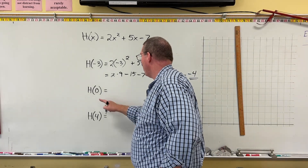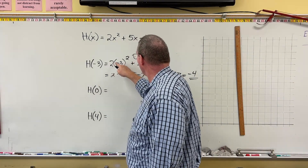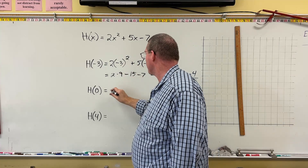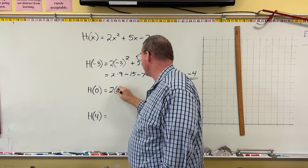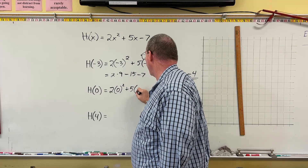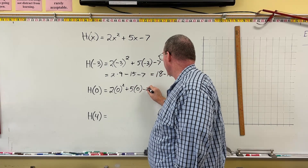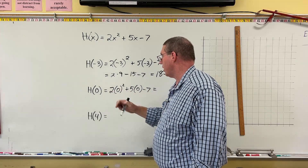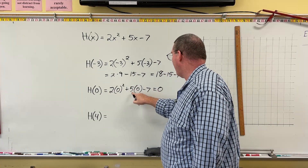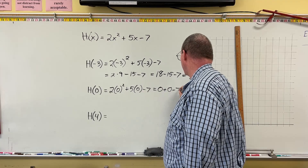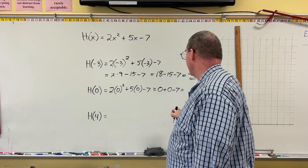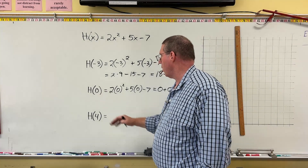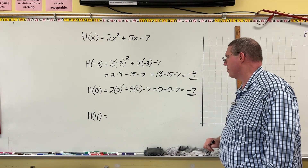For H(0), we plug in 0 the same way: 2(0)² + 5(0) − 7. Zero squared is 0, 2 × 0 = 0, and 5 × 0 = 0. So we have 0 + 0 − 7 = −7. Therefore the input 0 goes along with the output negative 7.